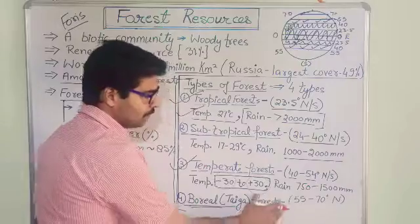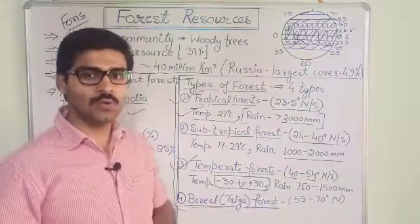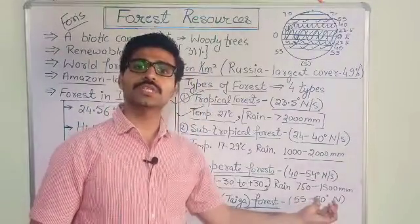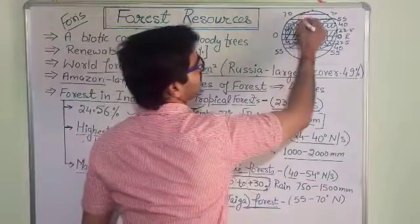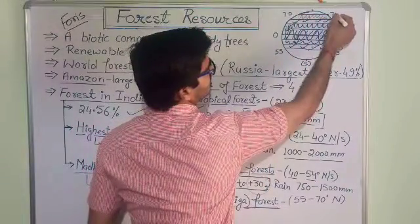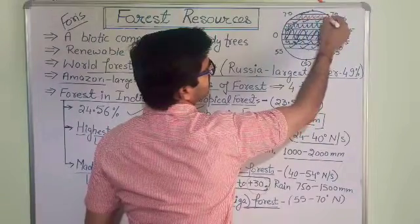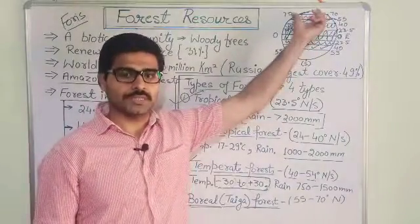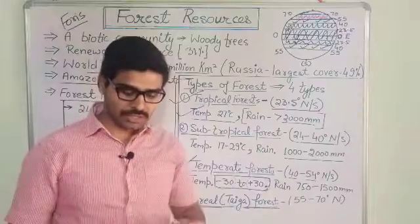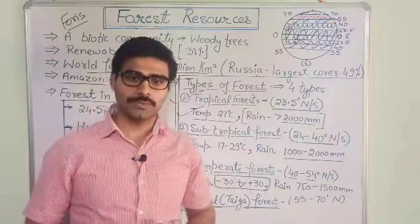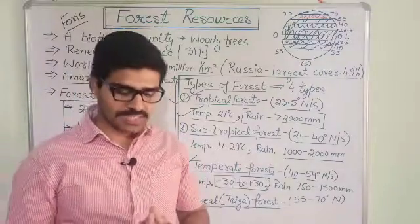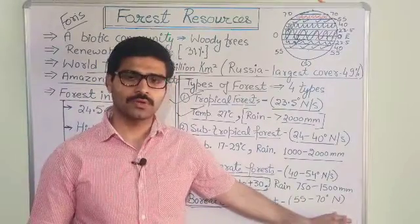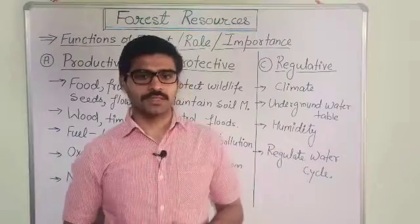The fourth category is boreal or taiga forests, found at latitudes of 55 to 70 degrees. The trees here are of coniferous or alpine type. Due to very low temperatures throughout the year, rainfall is in the form of precipitation, about 1000 millimeters. This covers all the types of forests.